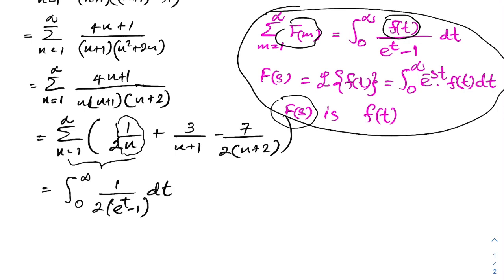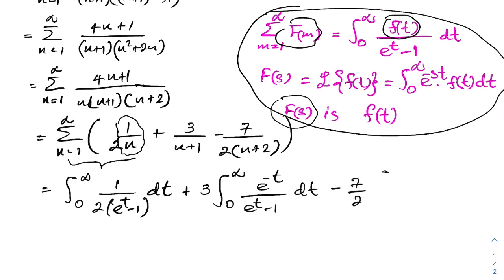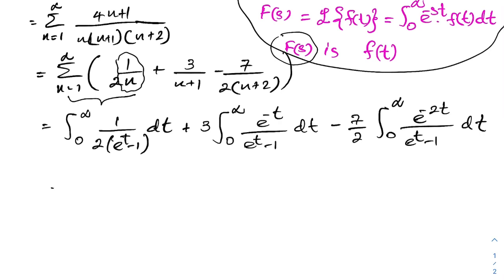Splitting into three integrals: plus 3 times the integral from 0 to infinity of the inverse Laplace transform of 1 over (n plus 1), which is e^(−t), giving e^(−t) over (e^t minus 1) dt; minus 7/2 times the integral from 0 to infinity of the inverse Laplace transform of 1 over (n plus 2), which is e^(−2t), giving e^(−2t) over (e^t minus 1) dt.